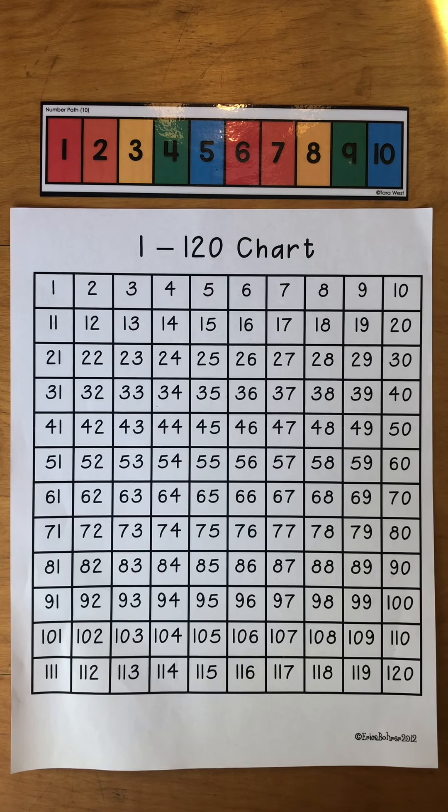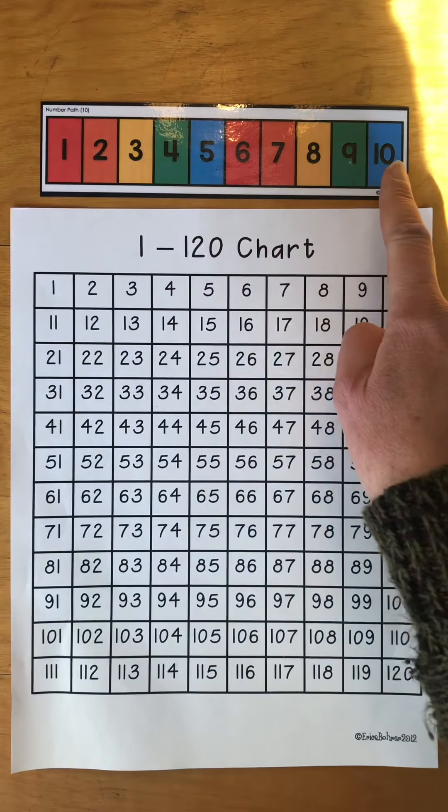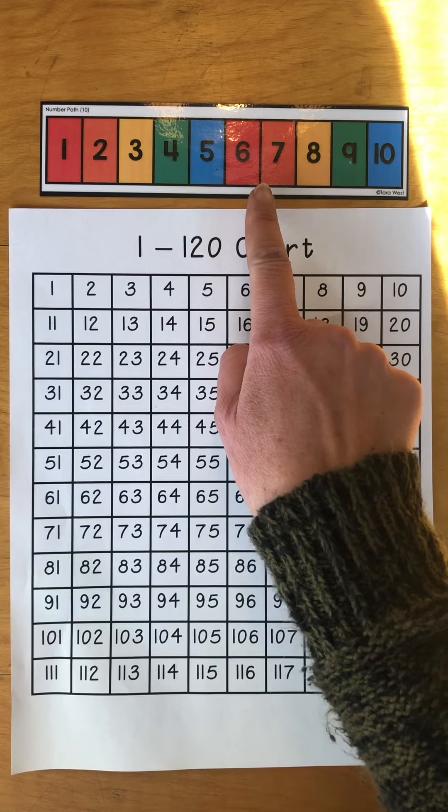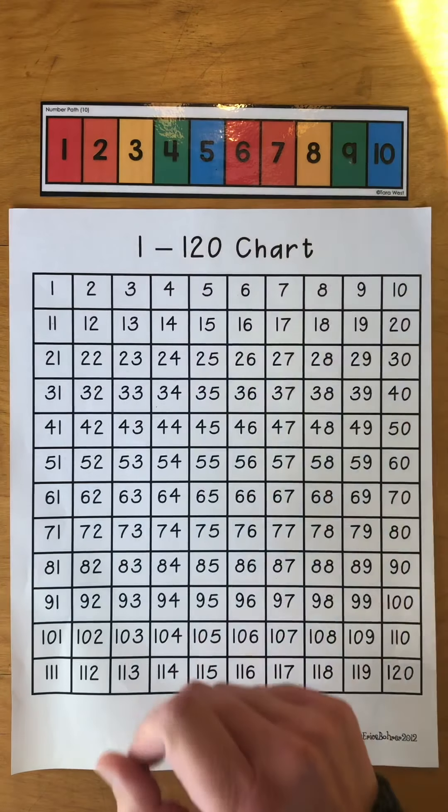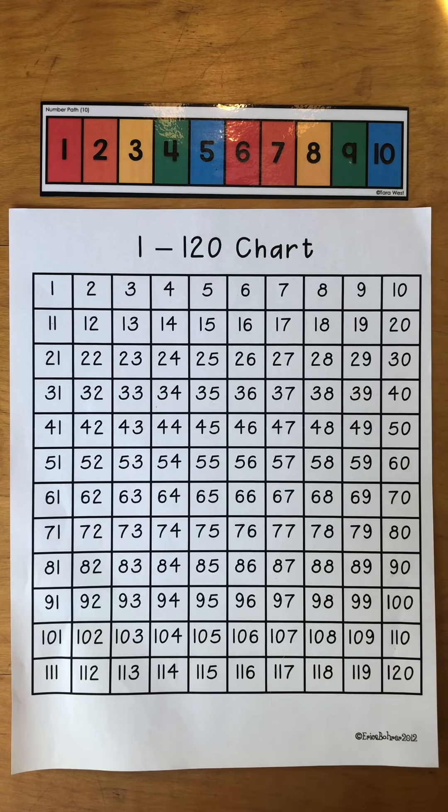Today we're going to talk about one less, or the number before. When we've been counting by tens, it's easier to think about those numbers. We say one through ten a whole lot. You've been saying those numbers since you were a baby, practicing one through ten.